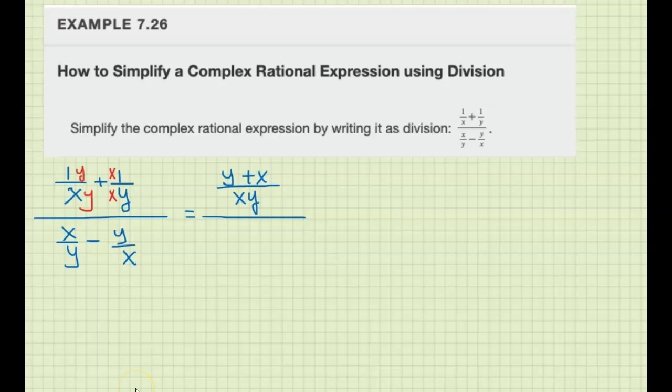All right, let's look at the bottom now. So we need a common denominator here also. This gets multiplied by x on the bottom and on the top, and this gets multiplied by y on the bottom and on the top. All right, let's put them as one fraction. So the common denominator is x y, and on the top we have x squared minus y squared.